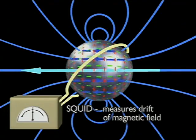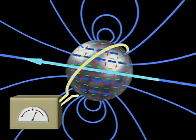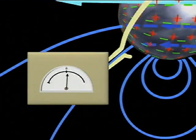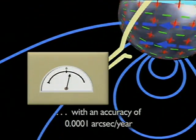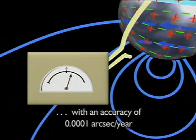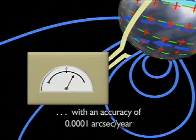As a gyroscope tilts, the magnetic polar axis tilts too and changes the magnetic field through the loop. So sensitive is a SQUID that a tilt by an angle of only 0.0001 arcsecond is detectable within a year.